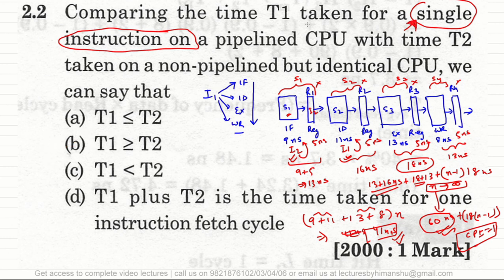So the answer to this GATE 2000 question is option B. We will now take some more examples and look at the architecture of pipelining and how it is implemented at the hardware level.